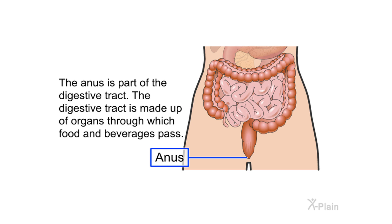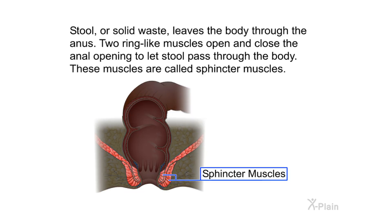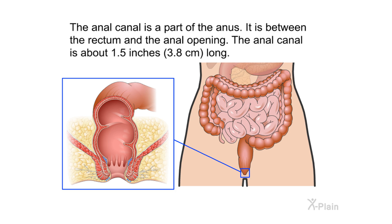The anus is part of the digestive tract, which is made up of organs through which food and beverages pass. The anus is at the end of the large intestine, below the rectum. It is the opening of the rectum to the outside of the body. Stool or solid waste leaves the body through the anus. Two ring-like muscles, called sphincter muscles, open and close the anal opening to let stool pass through.